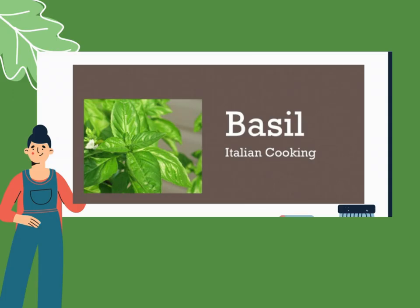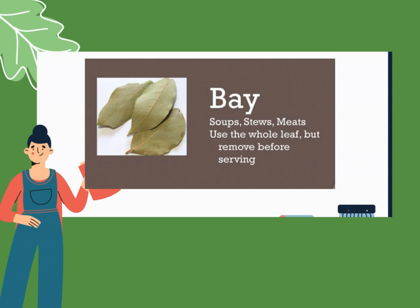I'll now present the different examples of herbs and spices. Let's start with herbs. This is basil, used for Italian cooking — mostly as garnish or mixed into pasta. Next, bay leaf or laurel. It's used for soups, stew, and meats. You can use the whole leaf but remove it before serving.